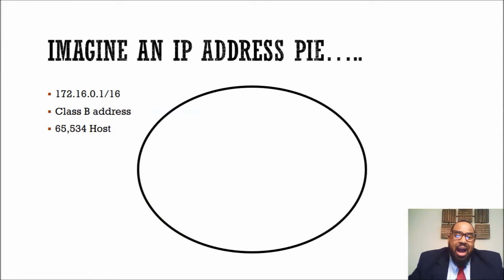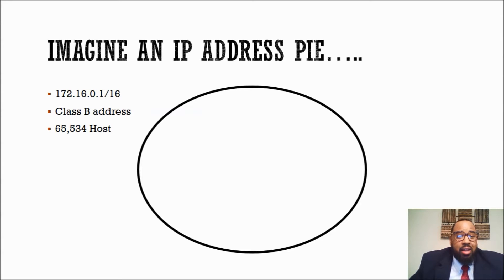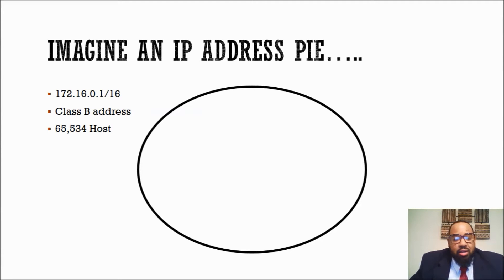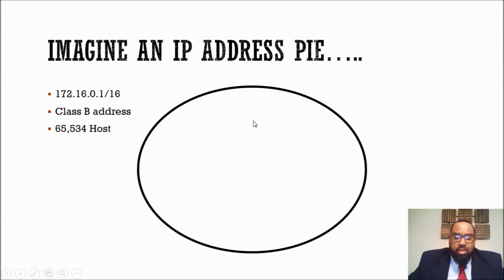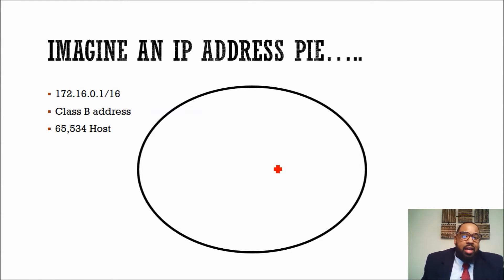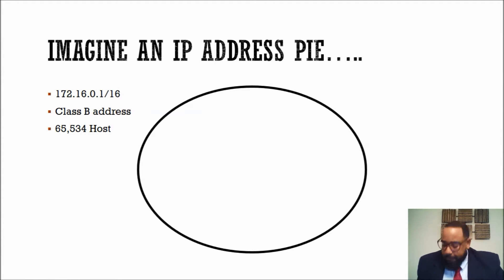Imagine an IP address pod. We have the IP address 172.16.0.1. Now, this is a class B address. In the class B address, you have 65,534 hosts. What that means is in this pod here, we have 65,000 hosts trying to communicate at the same time.